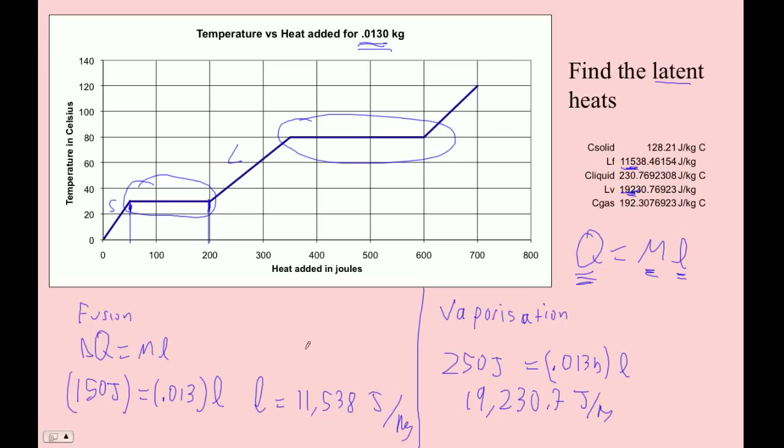Now with sig figs, it looks like here we've got three sig figs. I think we could argue that we maybe know these to three sig figs. So if we had to round these to sig figs, we'd have to say 11,500 joules per kilogram. And then this guy would be 19,200 joules per kilogram.